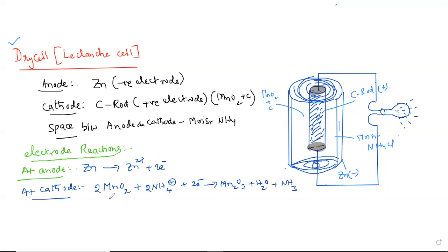For simplicity, you can also write this equation as MnO2 + NH4+ + e- → MnO(OH) + NH3. In this, whatever you are observing, this ammonia formed in this reaction...